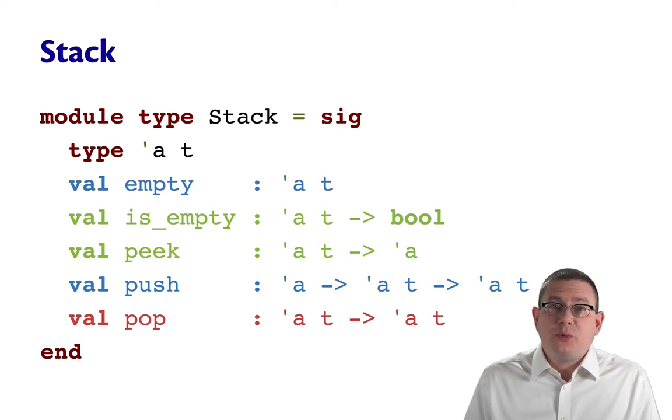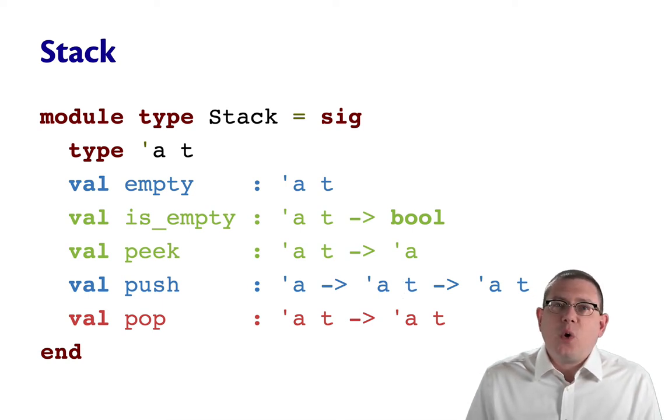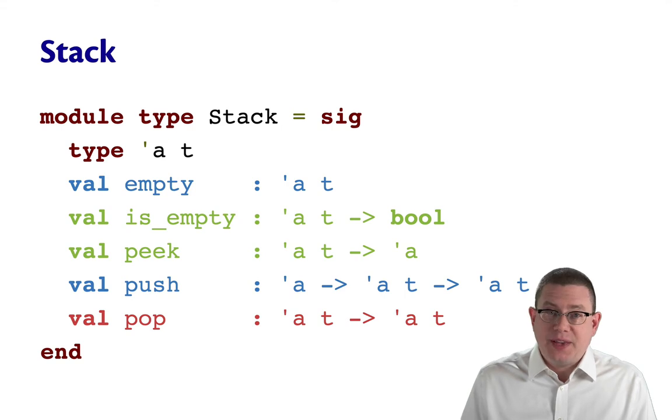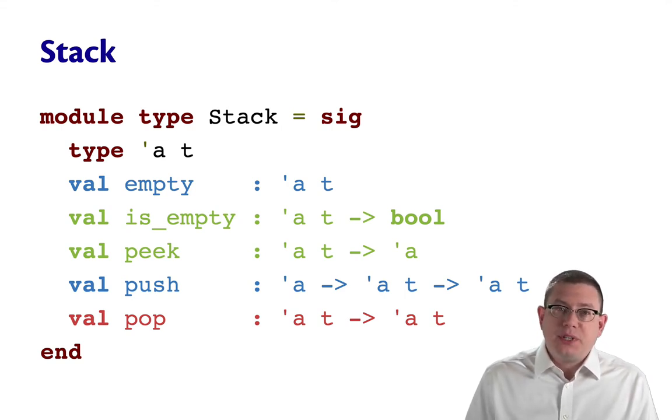Let's start our study of algebraic specification by looking at our old friend, the stack interface. You'll see in this version of the interface I'm not using options anywhere, so presumably these operations are raising exceptions. I've also color-coded these to help us keep track of which operations are being used where.